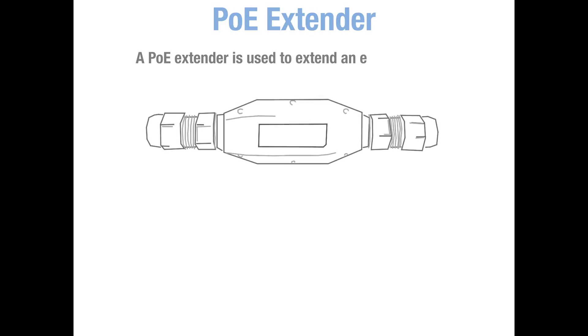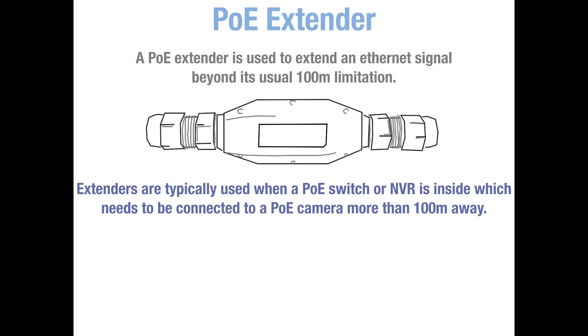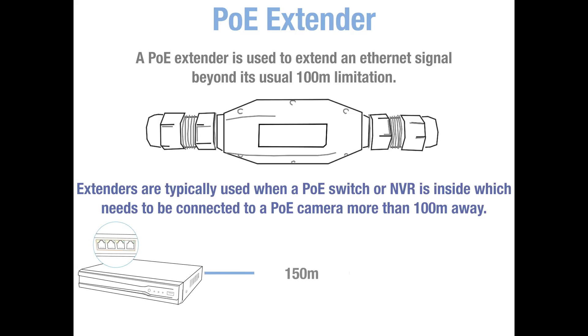Another network device that may be needed in your system is a PoE extender. The nominal maximum leg length of network cable from the PoE source is 100m. An extender is designed to extend an ethernet signal beyond its usual 100m limitation. Extenders are typically used when there is a PoE switch or NVR inside that needs to be connected to a PoE camera which may be more than 150m away in a shed or garage.